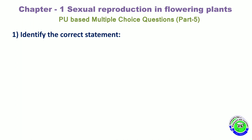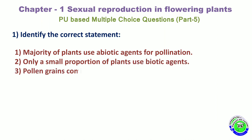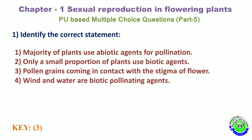Identify the correct statement. Option 1: Majority of plants use abiotic pollinating agents for pollination. Option 2: Only a small portion of plants use biotic agents. Option 3: Pollen grains coming in contact with stigma of a flower. Option 4: Wind and water are biotic pollinating agents. The correct answer is the 3rd option.